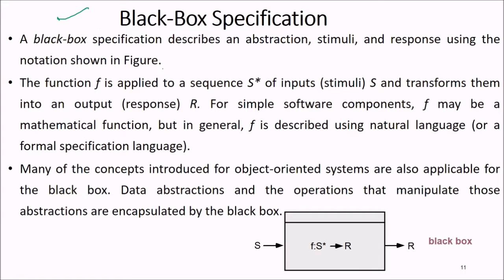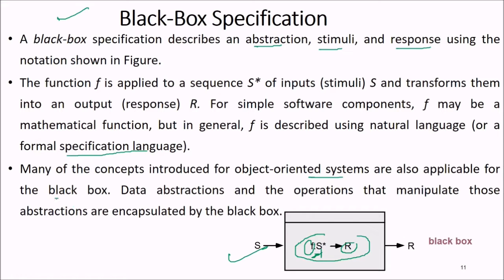The black box specification describes an abstraction of stimulus and response: a function f is applied to a sequence of inputs s and transforms them into an output response r. For simple software components, f may be a mathematical function; in general, f is described using natural language or a formal specification language. Data abstraction and operations that manipulate those abstractions are encapsulated by a black box, making many object-oriented concepts applicable here.